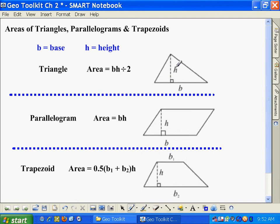For a triangle, the formula is area equals base times height divided by 2.